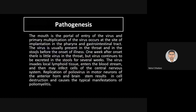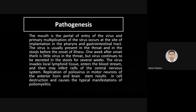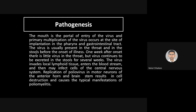Regarding pathogenesis — how the virus moves in the body: the mouth is the portal of entry. Primary multiplication occurs at the site of implantation in the pharynx and gastrointestinal tract. The virus is usually present in the throat and stools before the onset of illness, similar to COVID-19 where a throat swab confirms the presence of the virus.